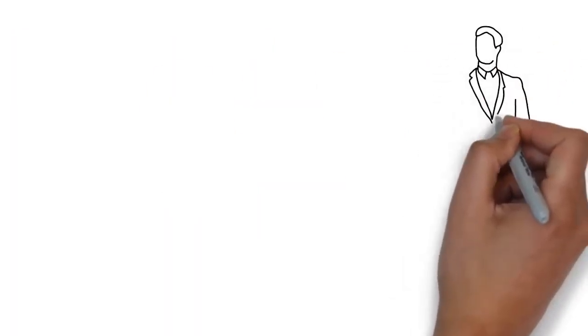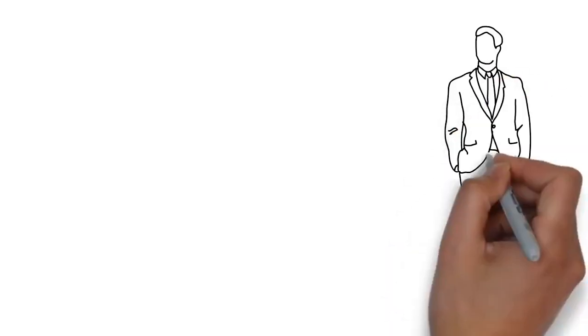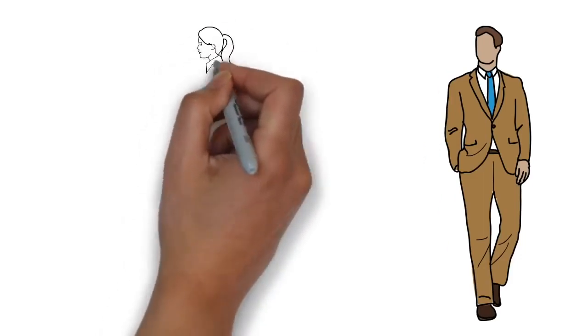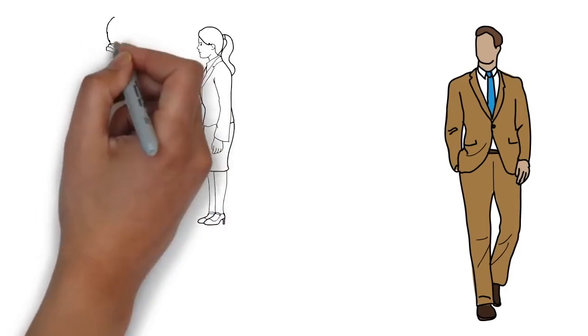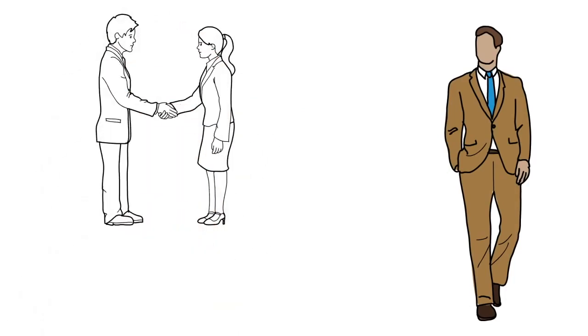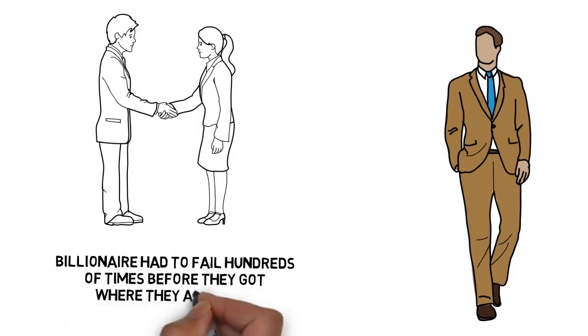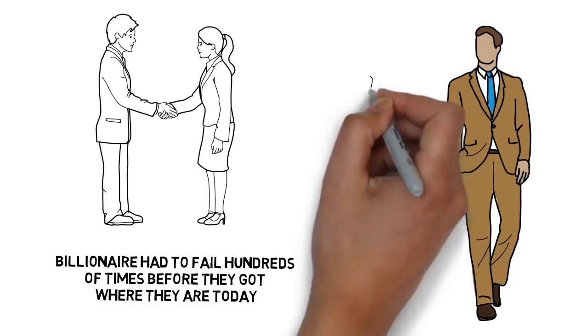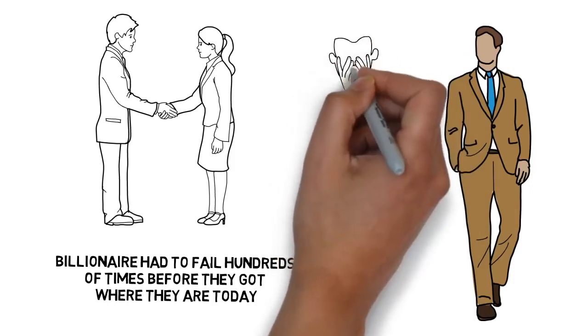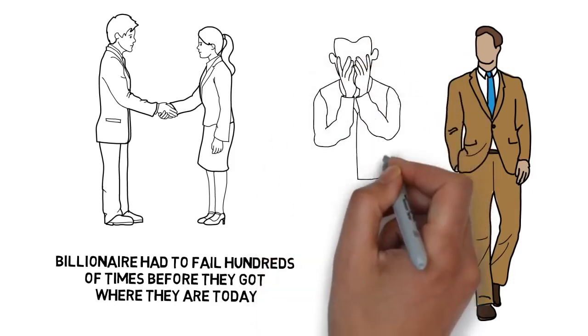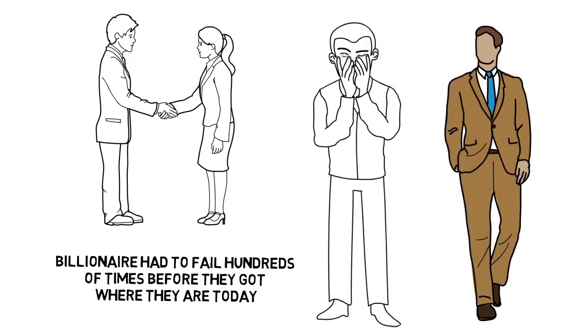Successful people, on the other hand, have no problem admitting when they've made a mistake because they know that learning from these mistakes will allow them to succeed next time. I'm not saying that rich people like to fail because no one actually enjoys failing, but nearly every billionaire had to fail hundreds of times before they got to where they are today. So next time you find yourself angry and disappointed, instead of yelling at who else could be responsible for your failure, take a minute to reflect on what you could have done wrong. Then you'll know exactly how to better yourself in the future.